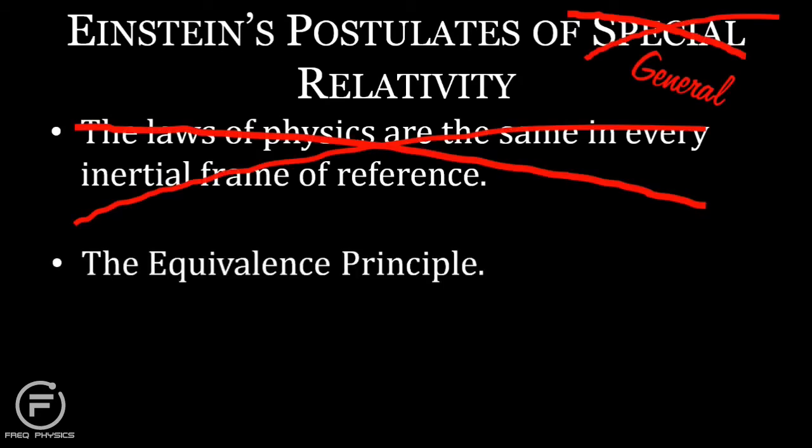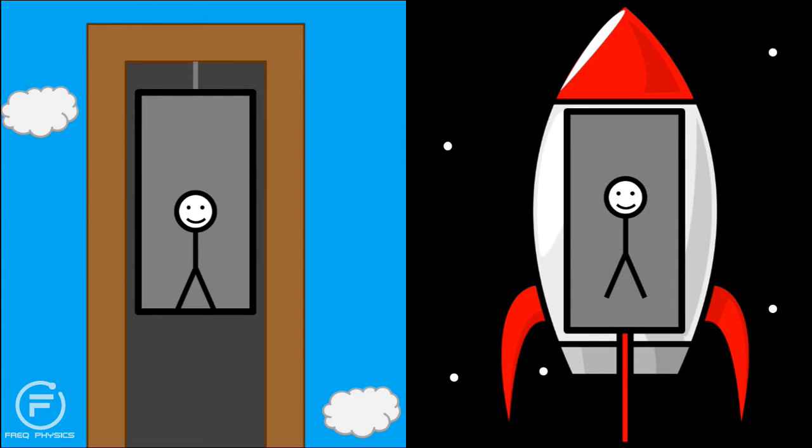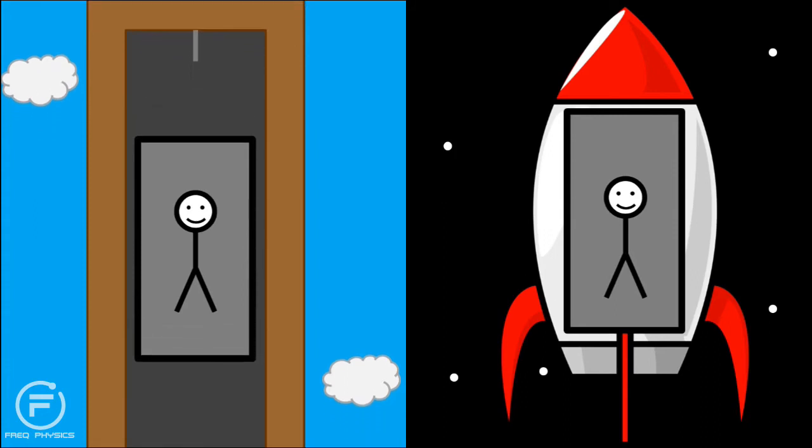Einstein did this with something called the equivalence principle. Imagine men in two lifts, one in a tall lift shaft on Earth, and one in a spaceship floating weightlessly in deep space. The cable of the first lift breaks, putting it into freefall and accelerating towards the ground. Now, both men are floating freely inside the lifts in the same way. Therefore, Einstein assumed that gravitational freefall and true weightlessness were equivalent.